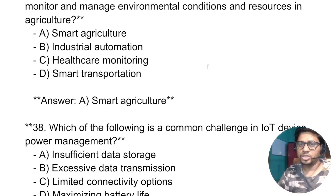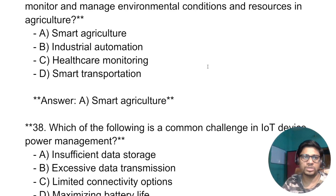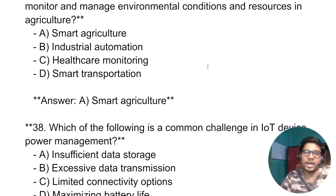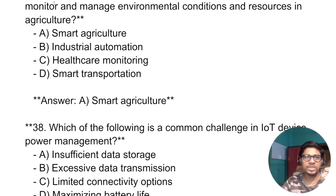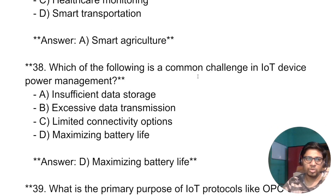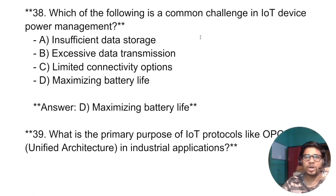What is the term for the process of using IoT technology to monitor and manage the environmental conditions and resources in agriculture? The answer is: smart agriculture.